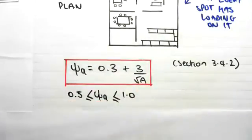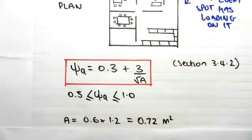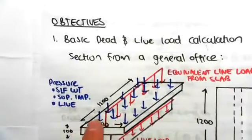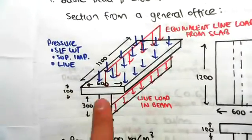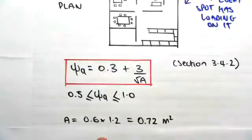So let's just see this in action, for example. Back to our problem we had before. The area of our slab would be 0.6 by 1.2 meters. 0.6 by 1.2 meters gives us 0.72 meters squared.